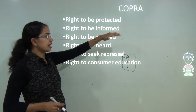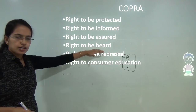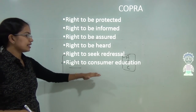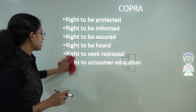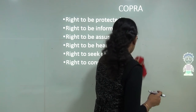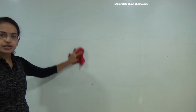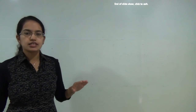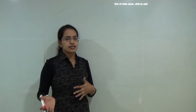Under COPRA, consumers have six basic rights: the right to be protected, the right to be informed, the right to be assured and heard, the right to seek redressal, and the right to consumer education. As a consumer, you can approach the court if these rights are not fulfilled. With this, Class 10 Economics is covered completely. More topics in economics and contemporary issues will follow in upcoming lectures.